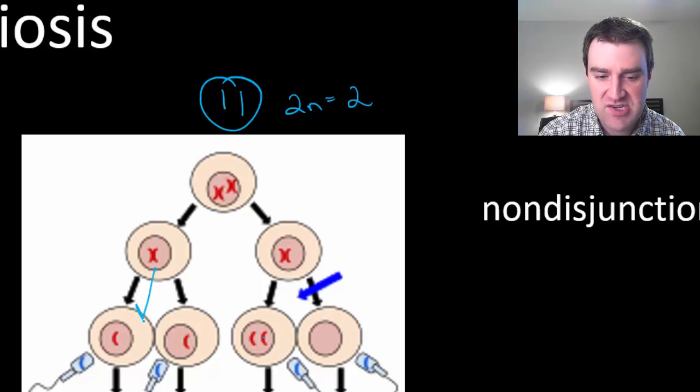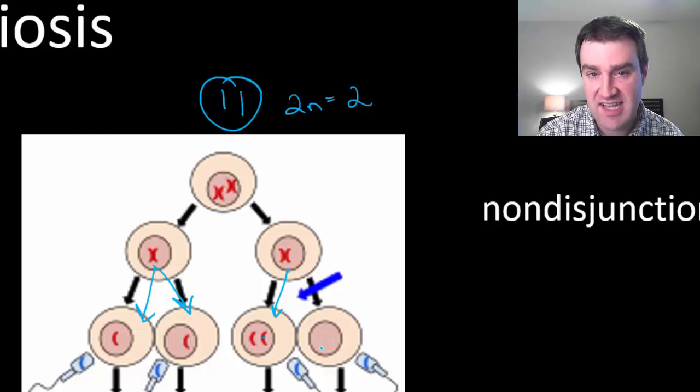Over here on the left side that should result in one in each of the haploid cells. But over here we've got one sex cell that has both copies and another sex cell that doesn't have any at all.